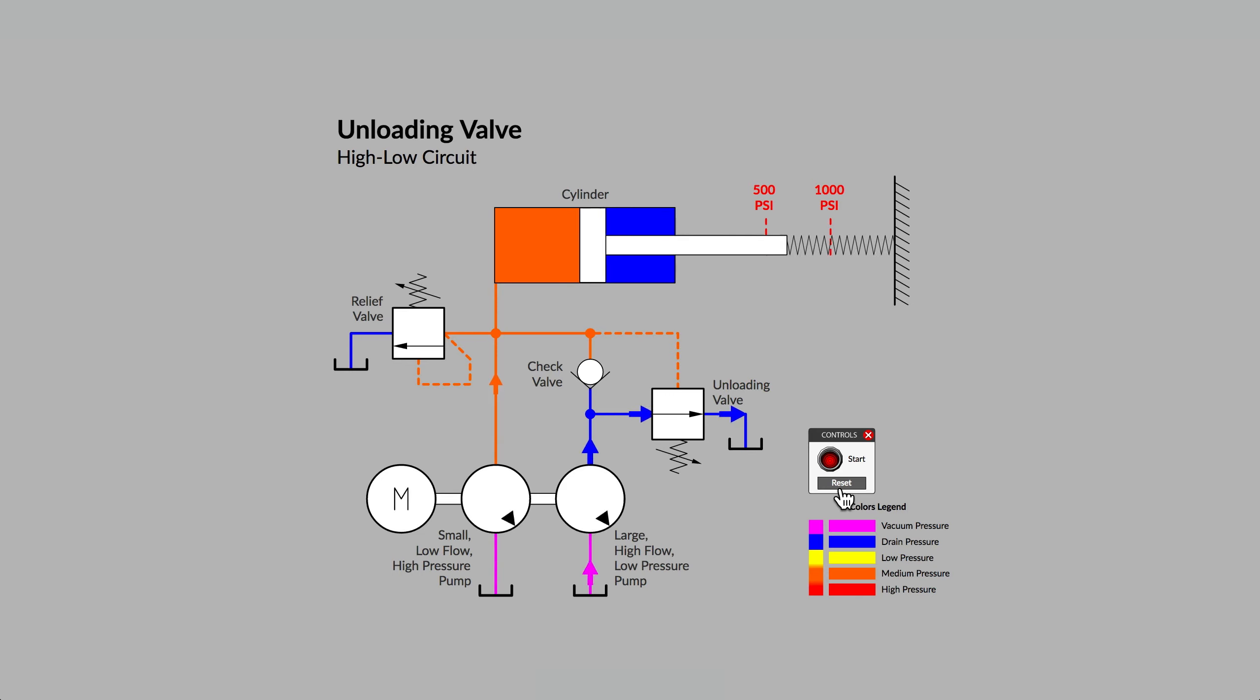Another point about an unloading valve that makes it unique from a relief valve is that once the unloading valve is triggered to the open position, the valve has very low resistance to flow passing through it. The pressure on the outlet port of the right-hand pump will be very low. That is what it means to unload. That is, to make it quite easy for the right-hand pump to move flow without requiring much power from the electric motor.